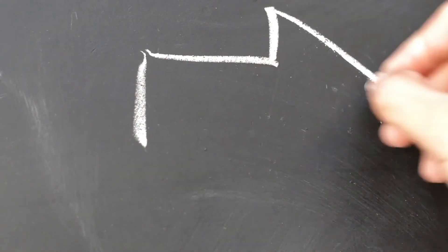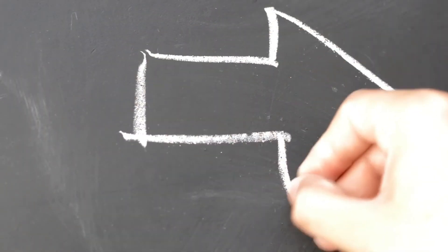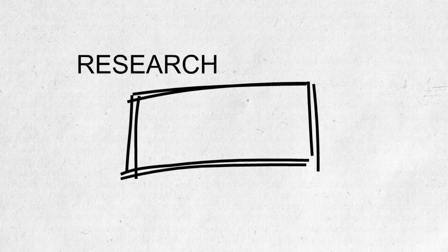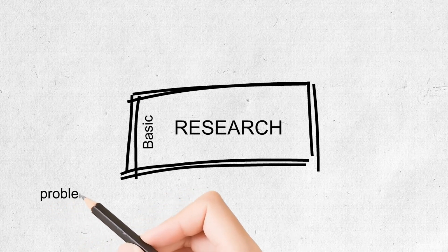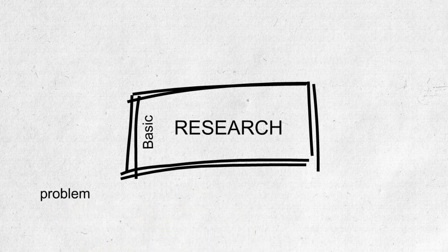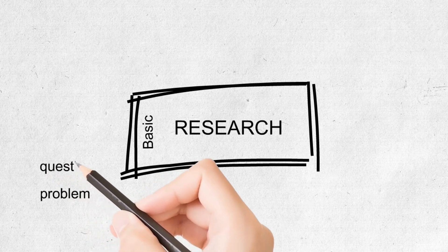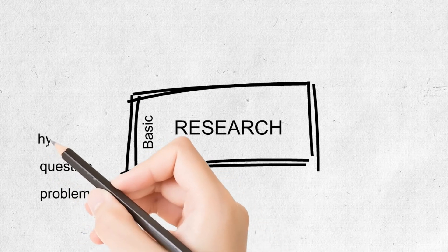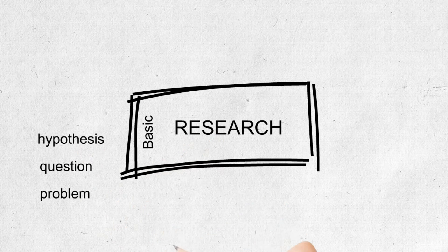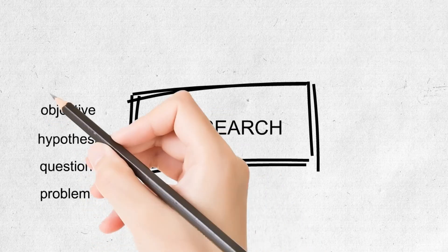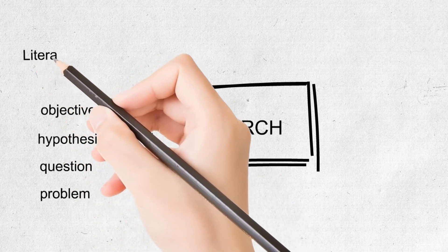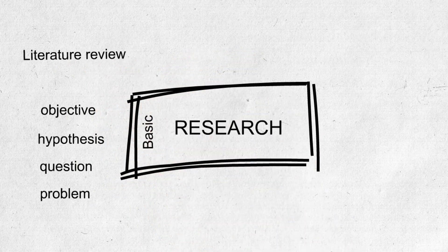Any research has a beginning and an end, so let's look at the main steps of the research process. You might need to start with basic research. A coherent research should address the problem with well-defined research questions, hypotheses, and objectives. During basic research, you also need to do a literature review, which means you may have to read many books and academic articles.